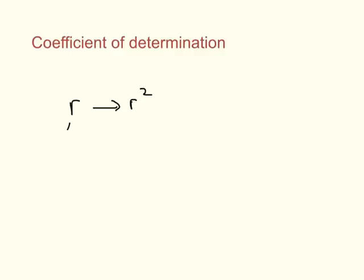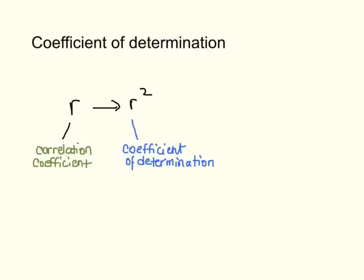This is the correlation coefficient. And then just squaring that value of the correlation coefficient gives you r squared, which is called the coefficient of determination. I've always just called it r squared, but this is the official name. And so what that means is that r squared is the percent of variance in one variable that can be accounted for by the other variable.